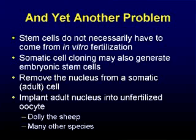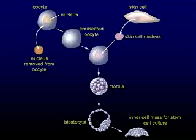Many other species - clones have been made with lots of different species: cats, dogs too. This basically shows how it's done. You've got the oocyte on the left-hand side, you take out the nucleus, you add the nucleus from the somatic cell, and you get the same developmental processes.